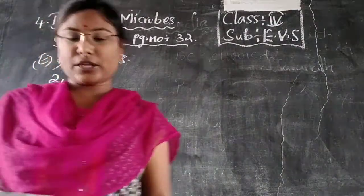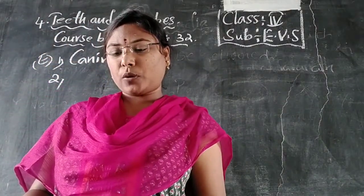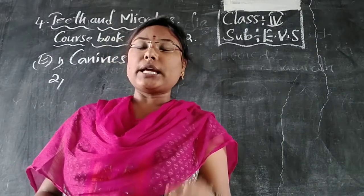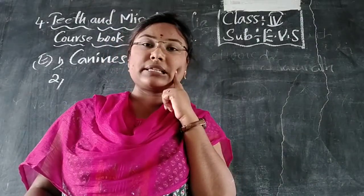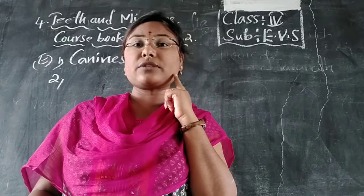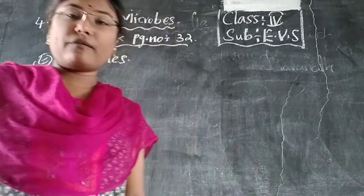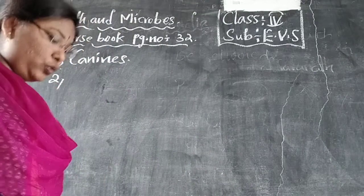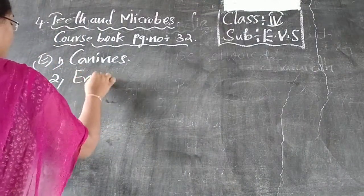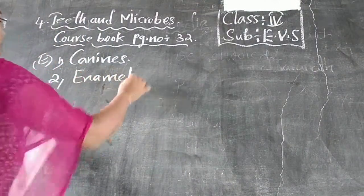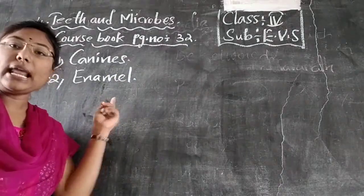Second question: the outer cover of the tooth. The outer cover of the tooth is enamel. It is the hardest bone. Which is the outer cover of the tooth? Enamel — E-N-A-M-E-L.